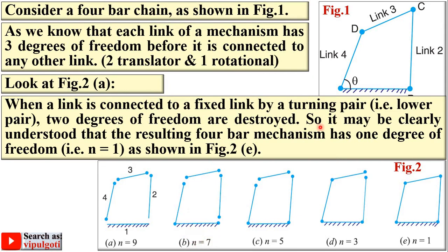The resulting four-bar mechanism has one degree of freedom, as shown in figure 2e. Each time a turning pair is added, two degrees of freedom are destroyed.